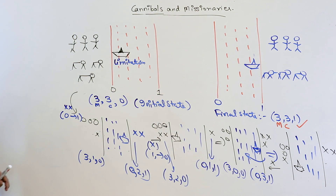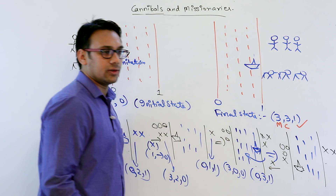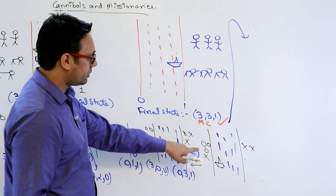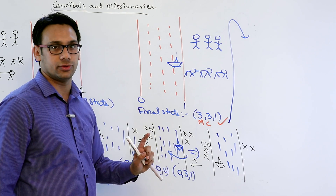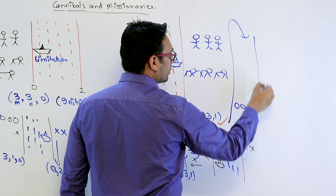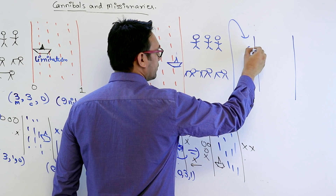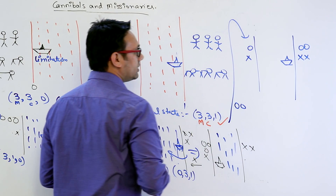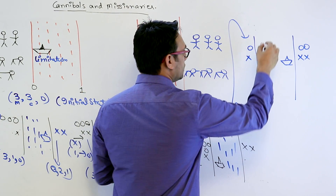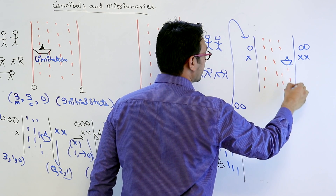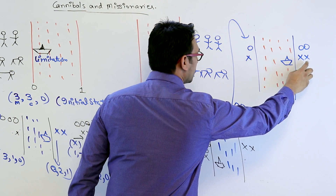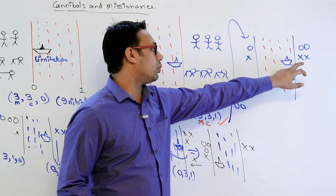Now we have three missionaries and one cannibal at bank 0, and two cannibals at bank 1. Next, we transfer two missionaries across in the boat. We now have one missionary and one cannibal at bank 0, and two missionaries and two cannibals at bank 1 — a safe state since cannibals do not outnumber missionaries.